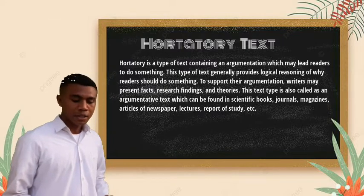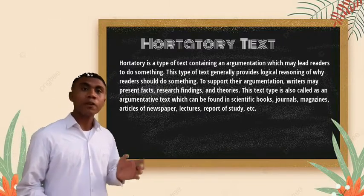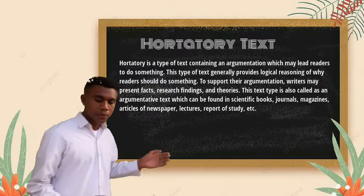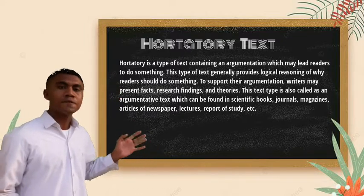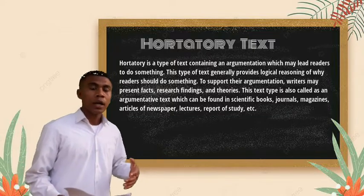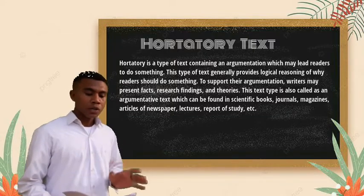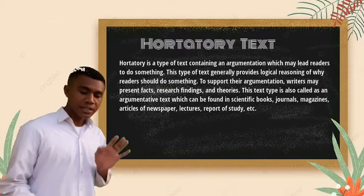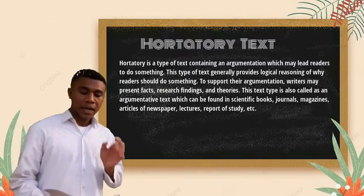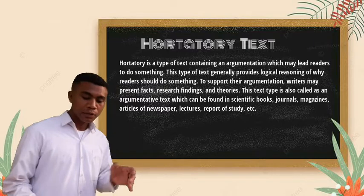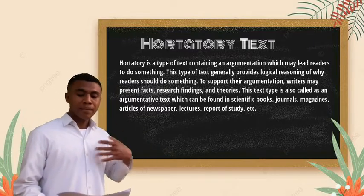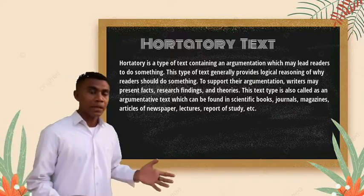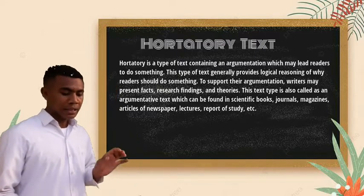This type of text is also called an argumentative text, which can be found in scientific books, journals, magazines, newspaper articles, lectures, reports of study, and so on. So we can say that hortatory exposition text can be defined as a type of persuasive English text. Typically, this type of text is used to explain to readers about something that can or cannot be done.